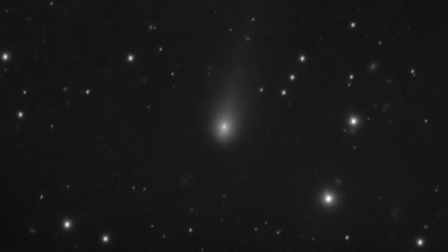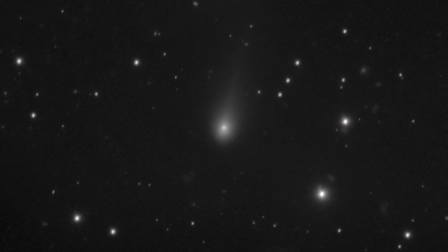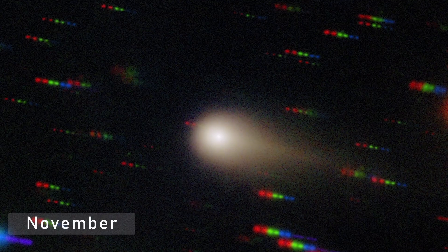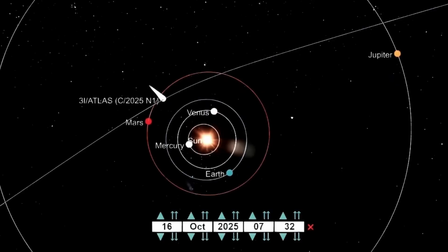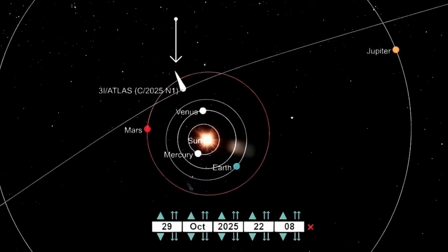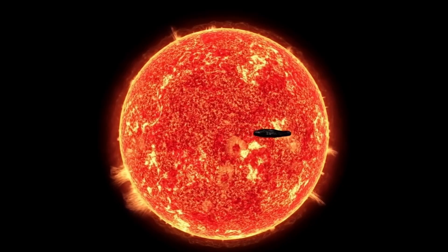When 3i Atlas finally re-emerged from the Sun's glare in early November, something had changed. Its brightness didn't fade as quickly as expected. Its color remained unusually blue, and its orbit, according to the first trajectory refinements, appeared to have shifted slightly.